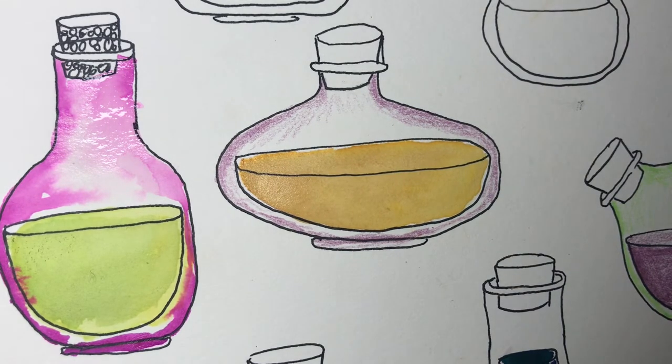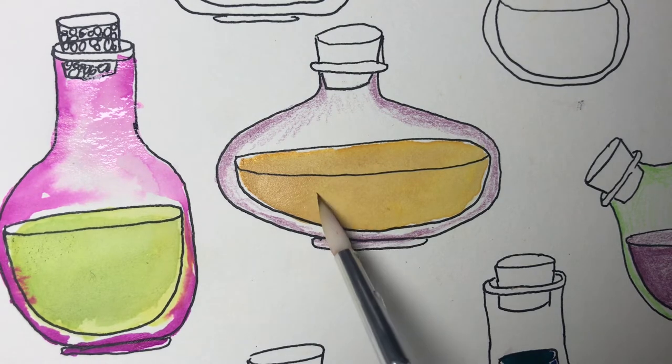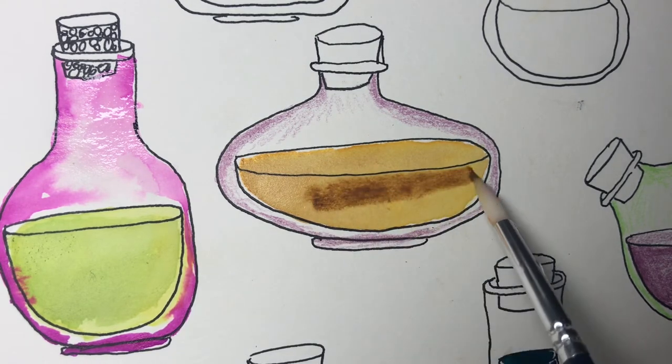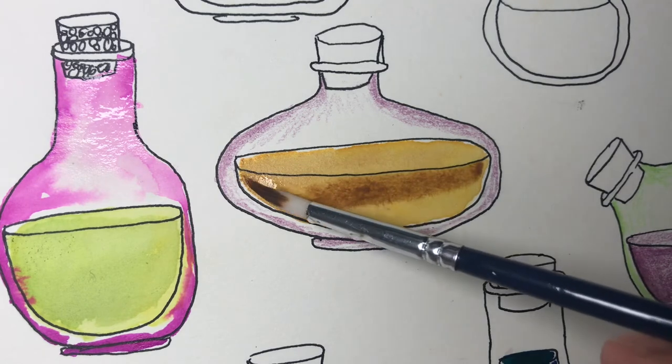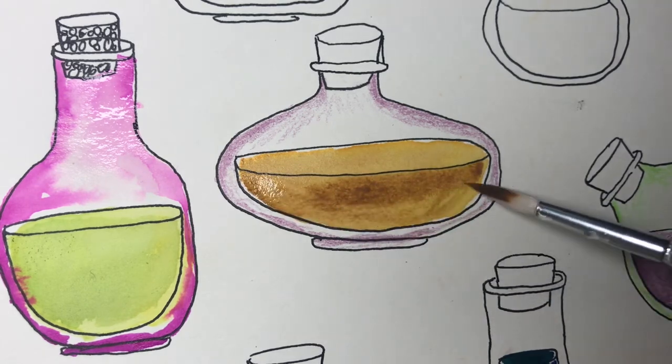And when my liquid is a bit more dry, I go back to the side and make it a little bit darker with one more bit of brown paint.